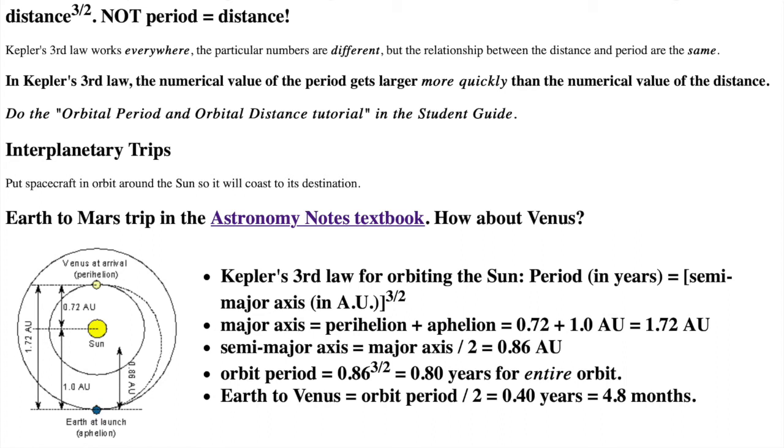Once we have found the scale of the solar system, we can find out how long it would take us to travel around in the solar system. I show how we travel from Earth to Mars in the Gravity chapter, so let's take a look at another example: Venus. Because, unlike the fantasy of movies, we don't have an infinite amount of fuel, so we put the spacecraft in orbit around the sun, and the spacecraft uses the sun's gravity to coast to its destination.